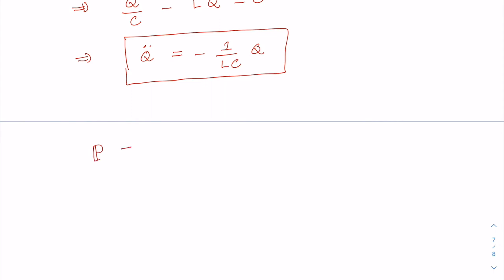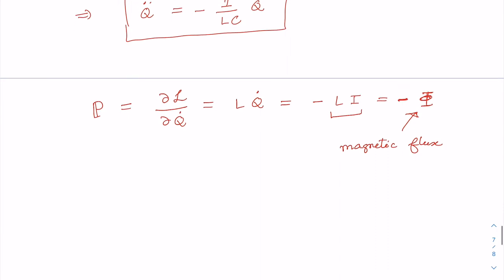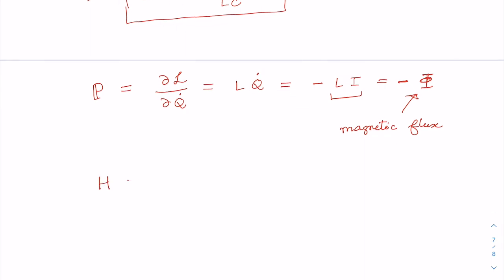As regards the canonically conjugate momentum: P equals del L / del Q-dot, which turns out to be L Q-dot, and in terms of current, L·I. You may recognize that L·I is nothing but the magnetic flux in the circuit, which I represent by the symbol phi. So when we take charge as our generalized coordinate, the generalized momentum — or conjugate momentum — is the magnetic flux phi in the circuit.